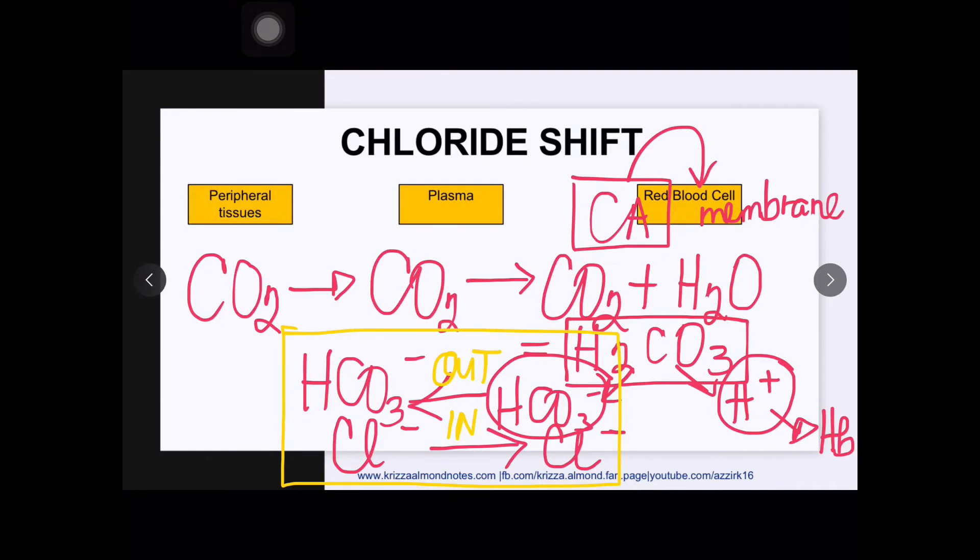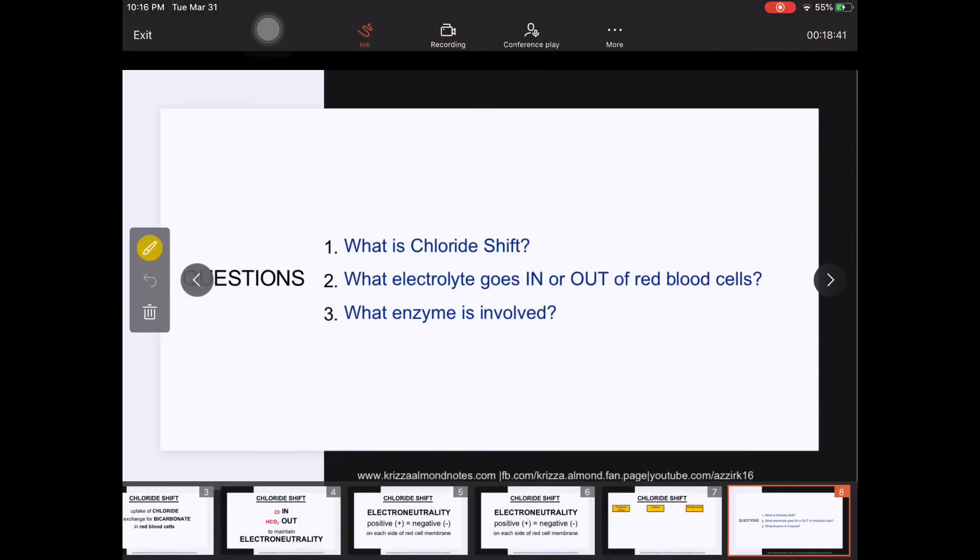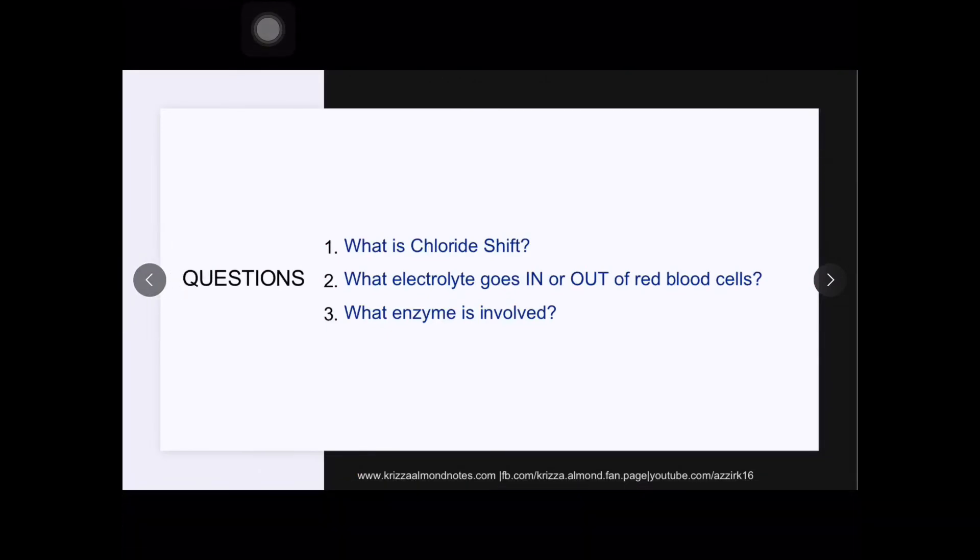Okay, so that will be our chloride shift and I think we have already answered the questions that we want to answer. And as a quick recap, chloride shift refers to the uptake of chloride in exchange for bicarbonate in our red blood cells and it is chloride which comes in the red blood cells and bicarbonate which comes out.